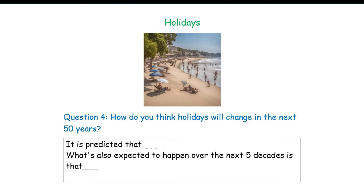Now let's look at question four: how do you think holidays will change in the next 50 years? Lastly, let's speculate on the future of holidays. Use a simple template to structure your response. Begin with a prediction such as 'it's predicted that' and discuss potential changes — for example, 'it is predicted that advancements in technology will further facilitate travel, making destinations more accessible and immersive.' Then address additional expectations with 'what's also expected to happen over the next five decades is that' and explain how factors like sustainability and wellness tourism may become more prominent.